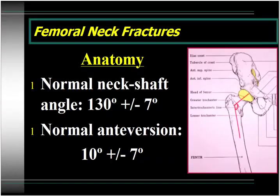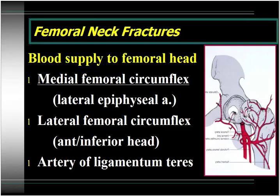For the anatomy of the proximal femur, the normal neck-shaft angle is 130 degrees with seven degrees of variation on either side. Normal anteversion can be anywhere from 3 degrees to 17 degrees with an average of about 10 degrees. The primary blood supply to the femoral head comes from the medial femoral circumflex artery, which courses up near the quadratus femoris. There is some minor contribution from the lateral femoral circumflex artery, supplying the anterior and inferior portion of the femoral head. There's also an insignificant supply through the artery of the ligamentum teres.